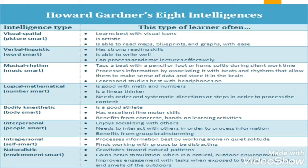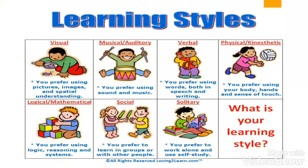The naturalistic learner gravitates towards natural patterns, gains brain stimulation when in a natural outdoor environment, and improves engagement with tasks when exposed to the light, sounds, and smells of the outdoors. You can think about some ways in which you learn and figure out what type of learning styles or strategies you use. I will now hand over to Ms. Fiona Garvey, who will be doing the visual learning strategy.